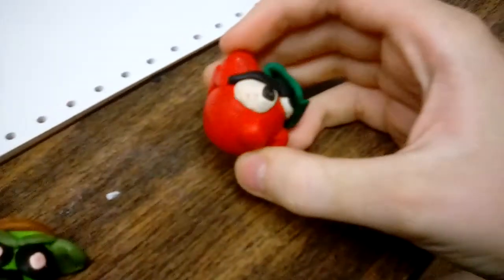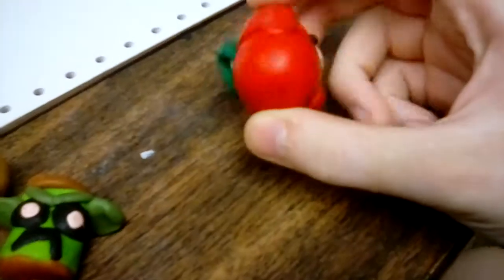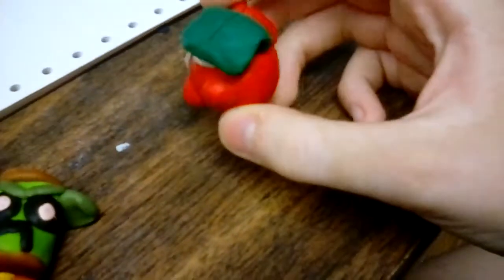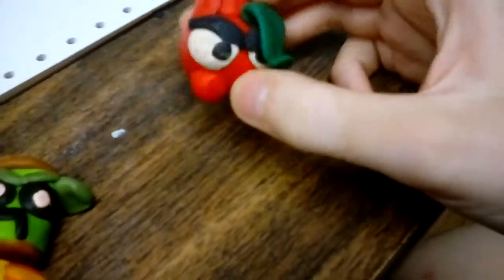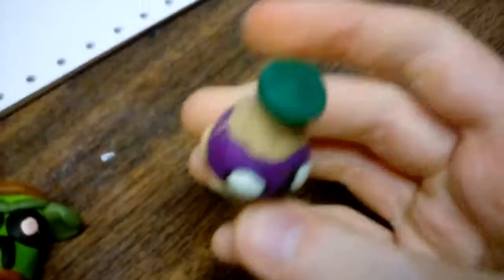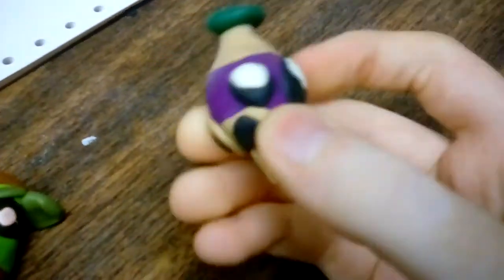Here we have the Bomegranate. I think I will make the Atomic Bomegranate. And yes, I have made PVZ Heroes clay figures. I'm just not going to show them in this video. Here we have the Roto-Baga. I was lazy with the leaves. A lot of these, my excuse is just going to be, I was lazy.